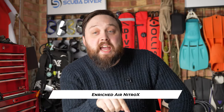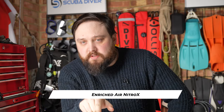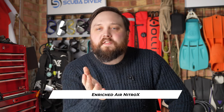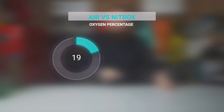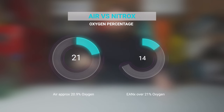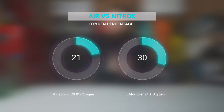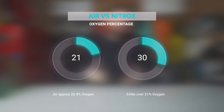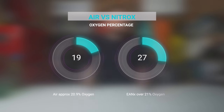EANX or EAN is enriched air nitrox. When filling cylinders, we fill with air and then add pure oxygen, or sometimes use a membrane to increase the amount of oxygen inside the cylinder, which can help to extend our bottom time.